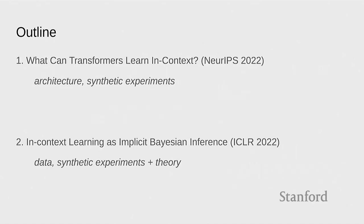So to the outline: we talked about what transformers can learn in-context, really thinking about it as an architectural question — can the transformer do certain things — and doing synthetic experiments on well-defined function classes to explore the limits of transformers. Now let's try to understand the role of data. The way we'll get at the data question may not be what you'd expect.